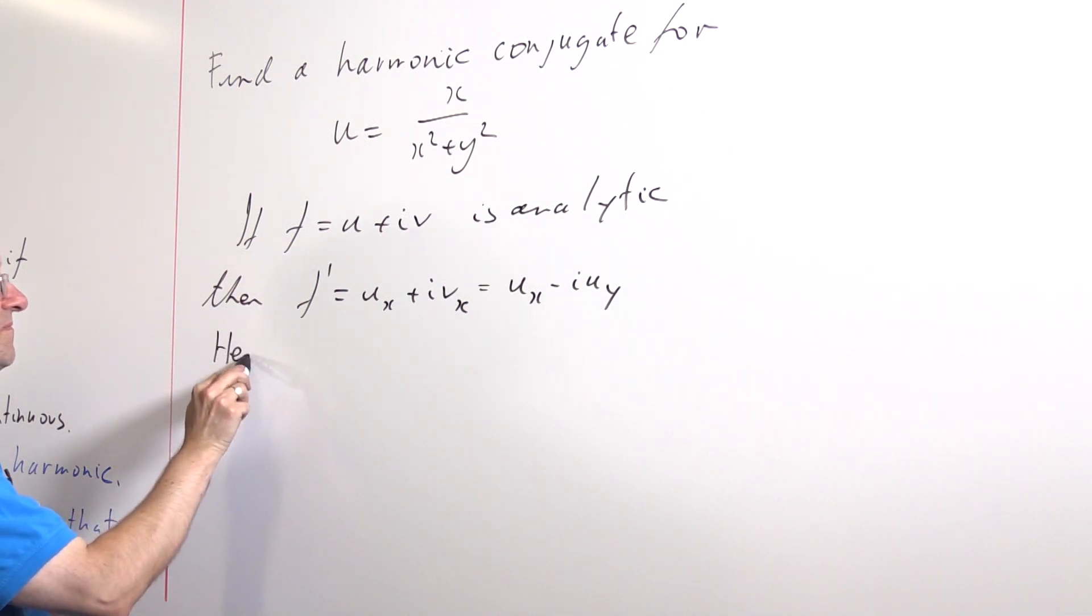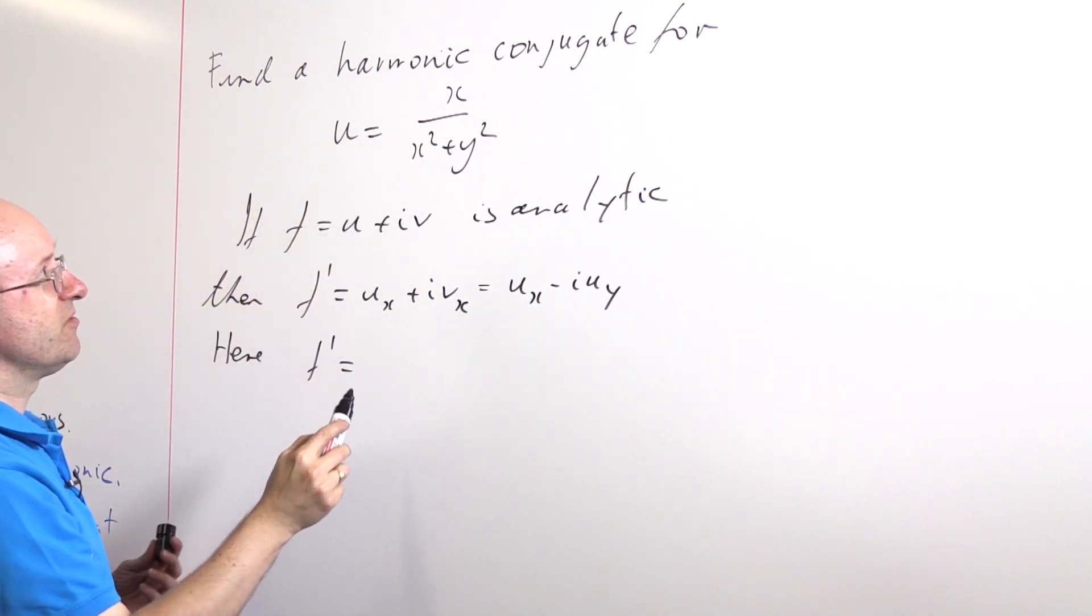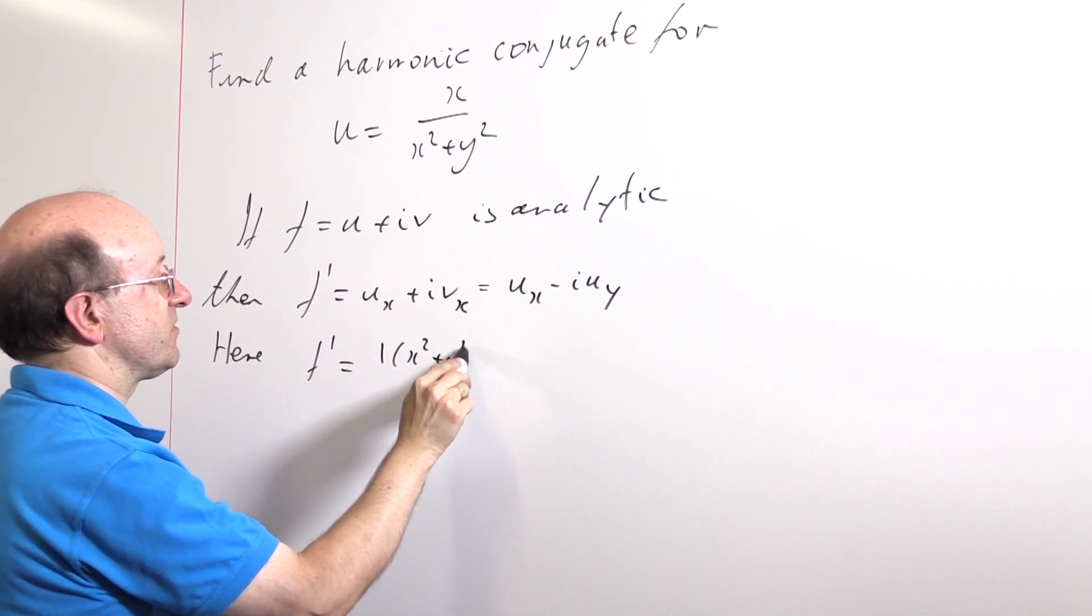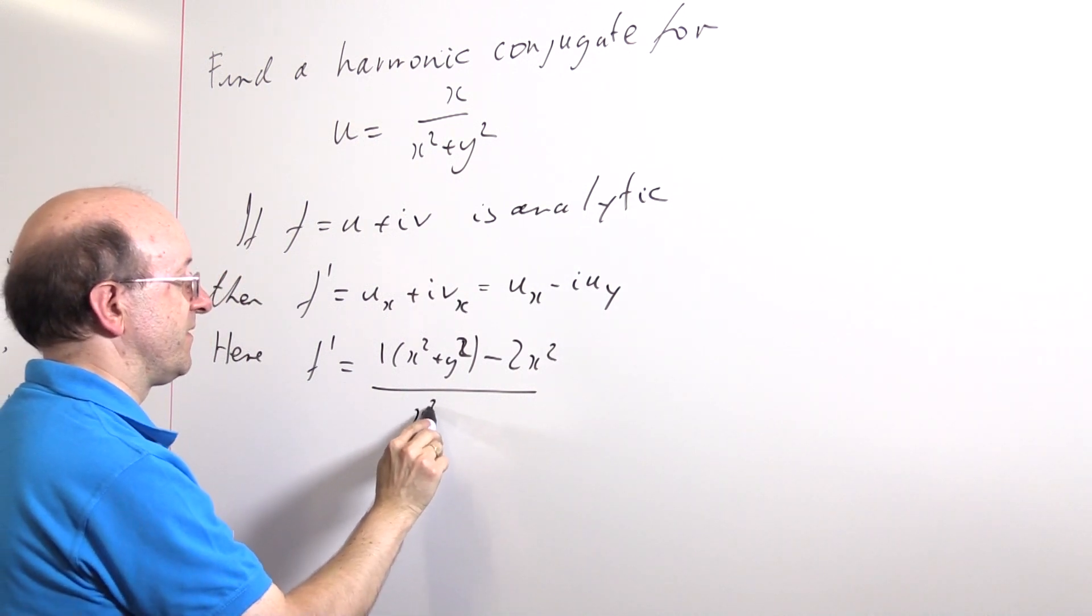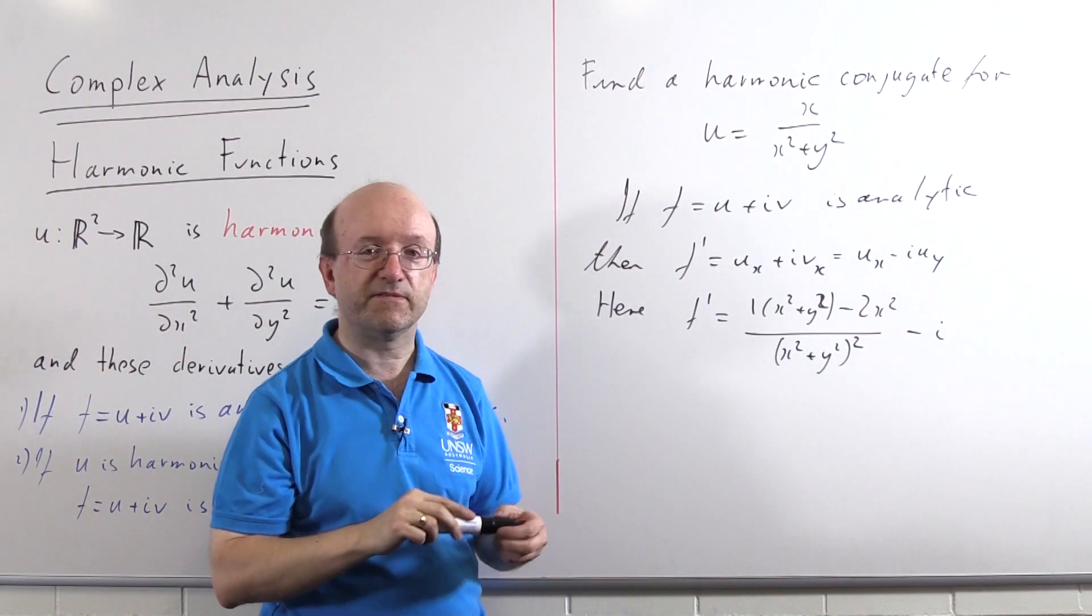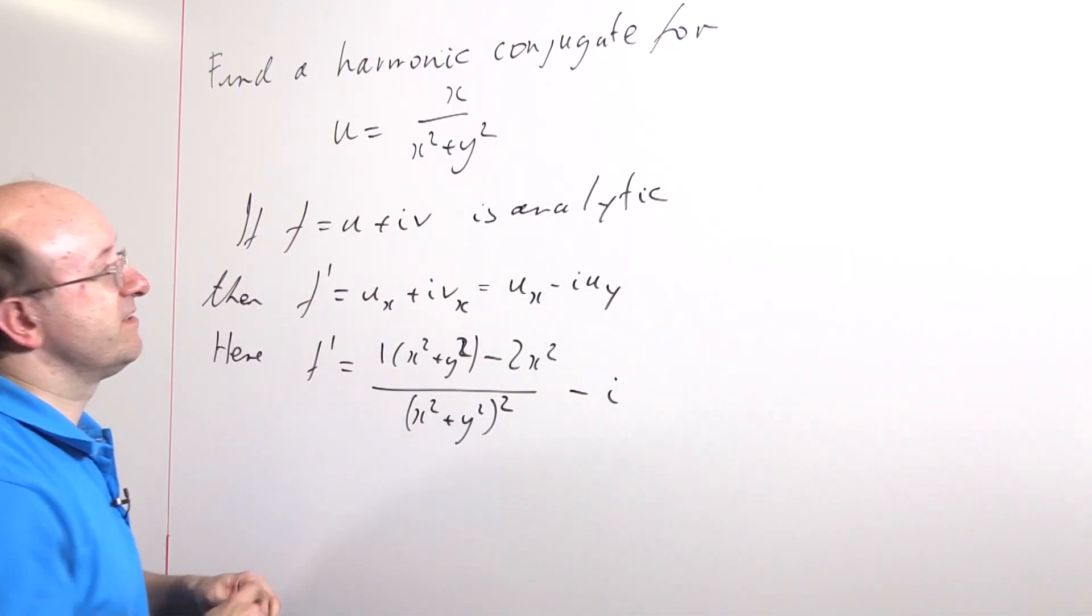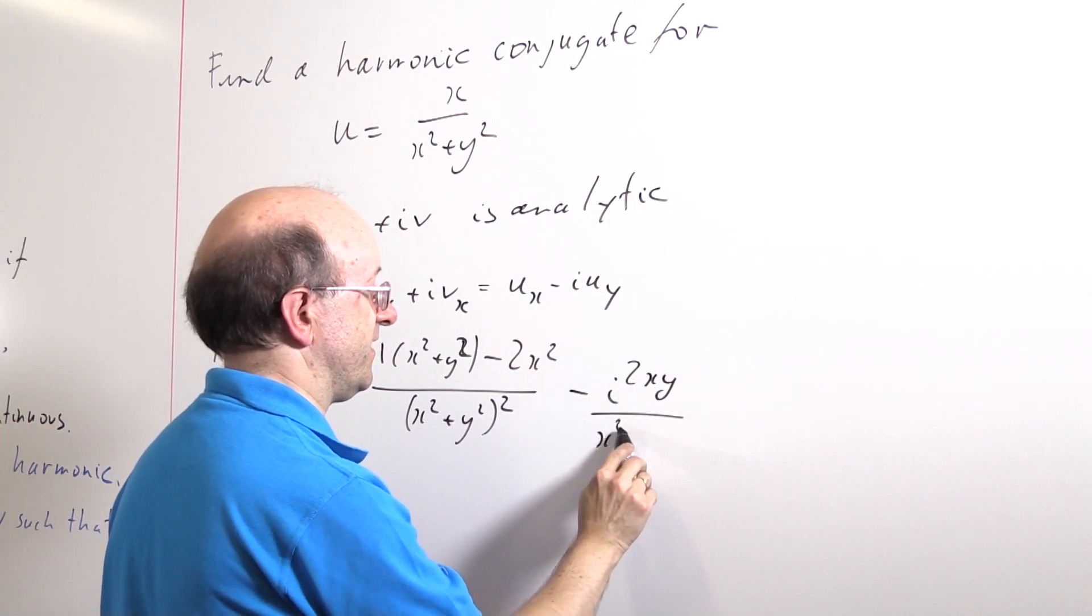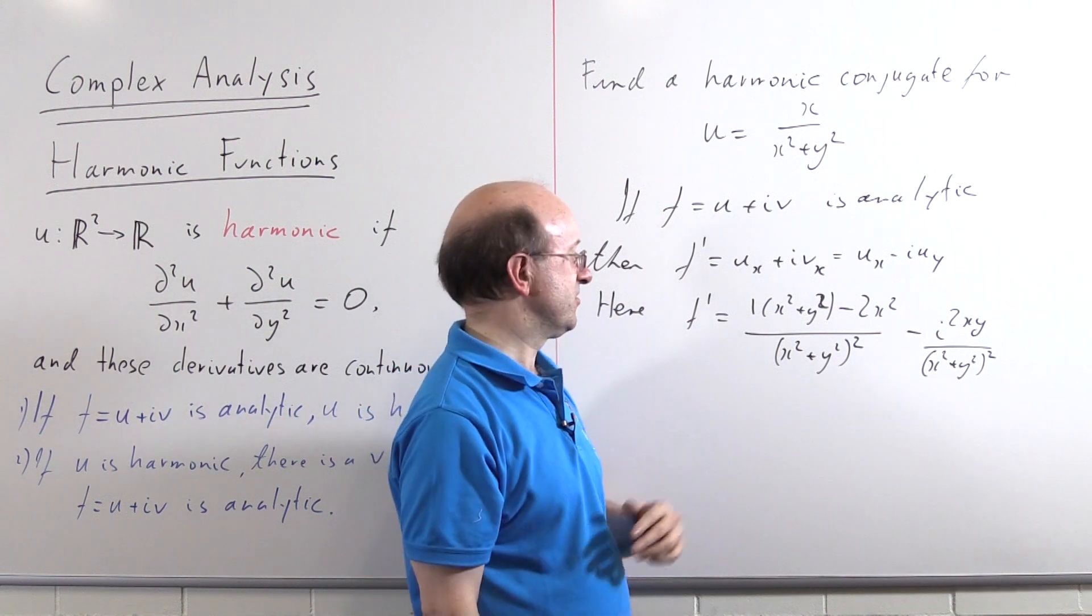So in this example, f' is, well, differentiate this thing with respect to x and it's a quotient. We're going to get 1 times (x² + y²) minus x times 2x, that's 2x², divided by (x² + y²)² minus i times the derivative with respect to y, which is 2xy/(x² + y²)². So that's f' as a function of x and y.